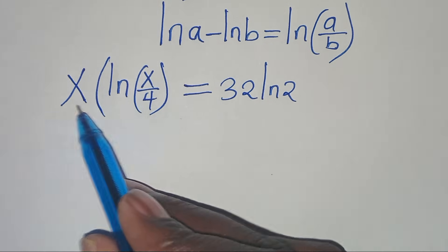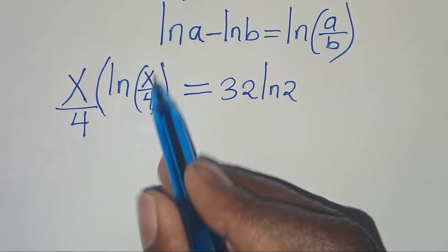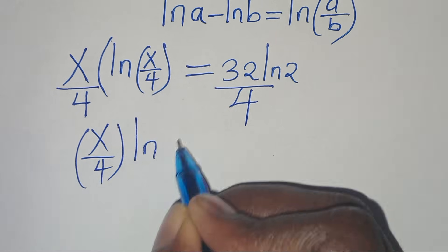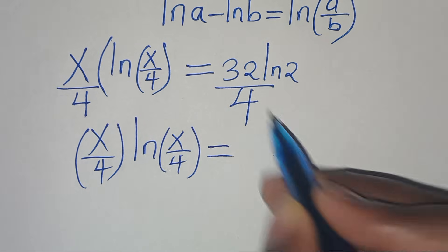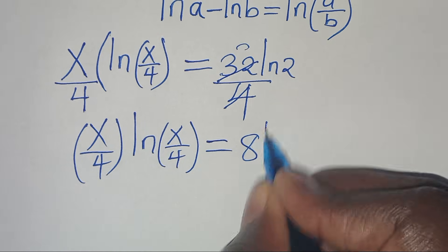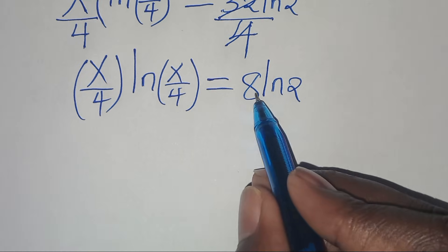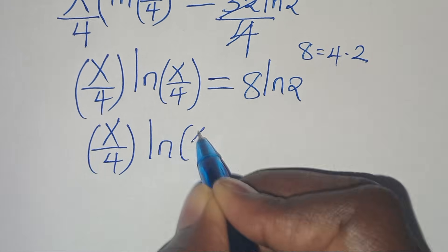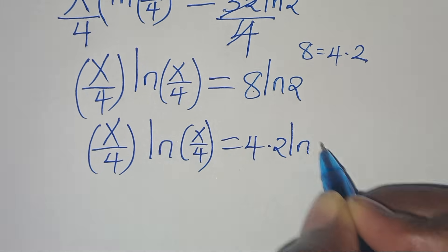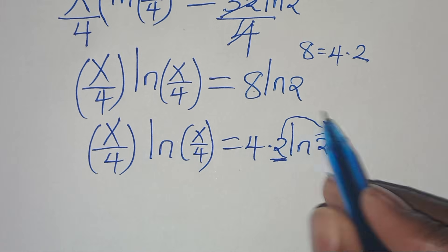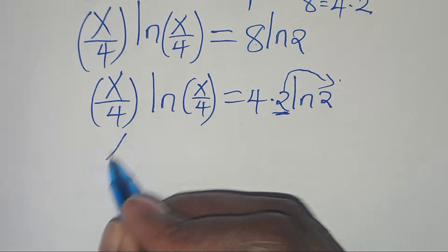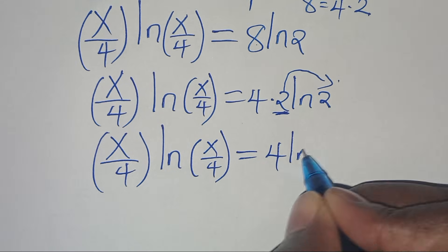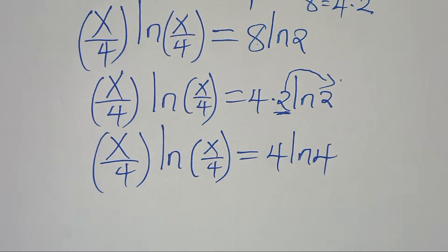The next step is to divide both sides by 4, so that we have x over 4 times ln of x over 4, this is equal to 8 ln of 2. We can express 8 as 4 multiplied by 2, so we have x over 4 times ln of x over 4 equals ln of 2 — noting this is a power — which becomes 4 multiplied by ln of 4, since 2 to the power of 2 is 4.